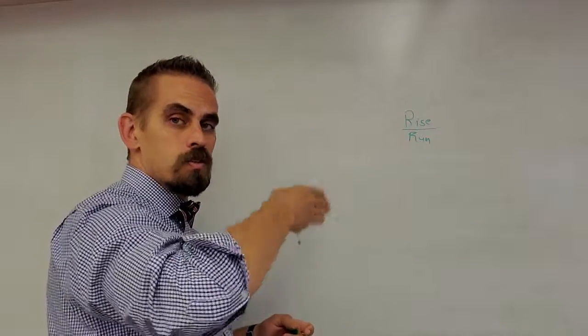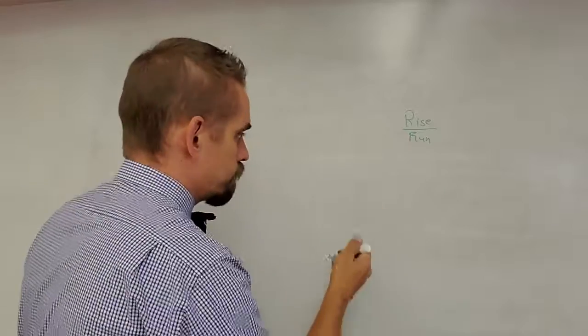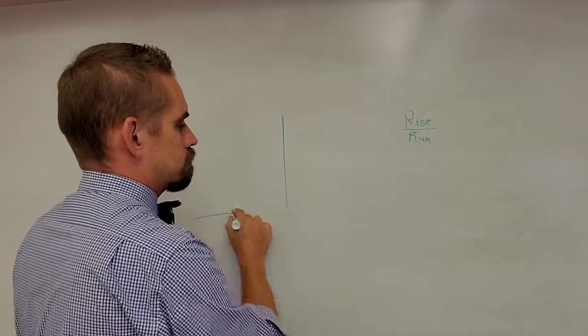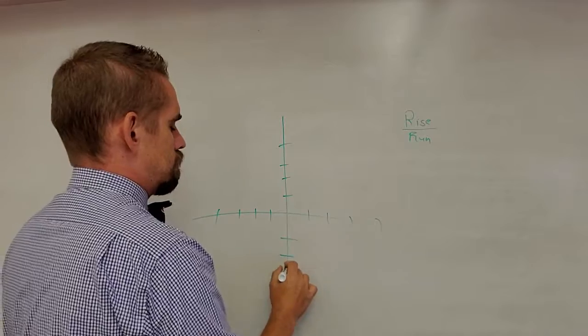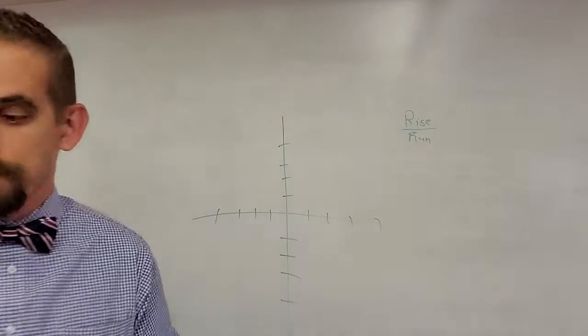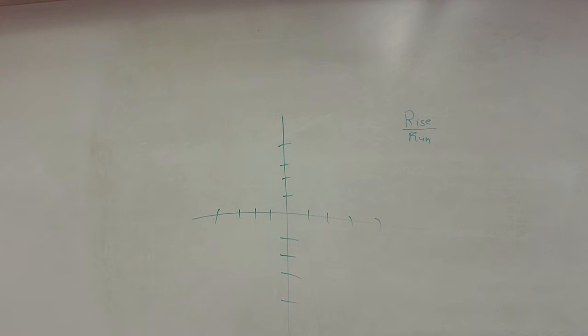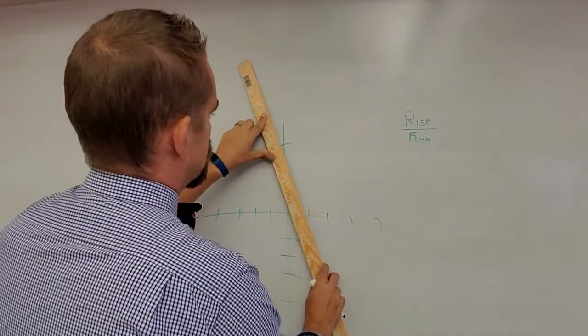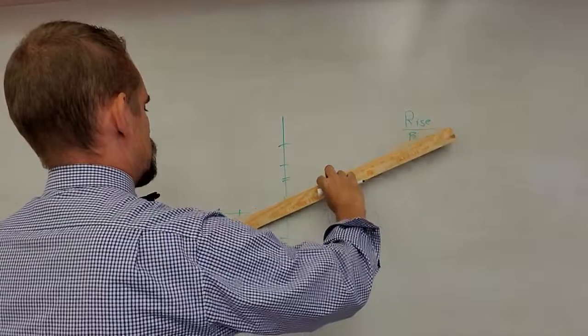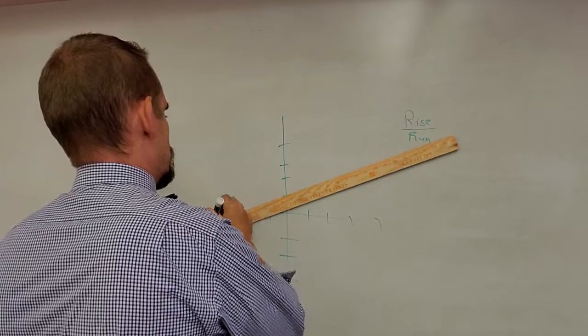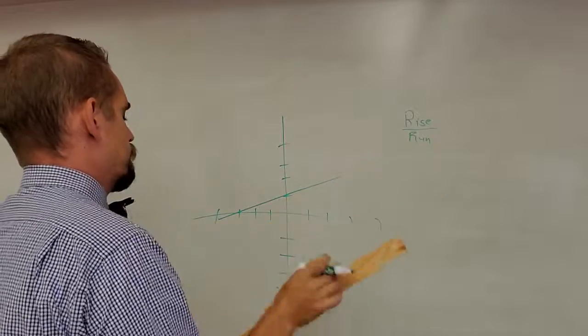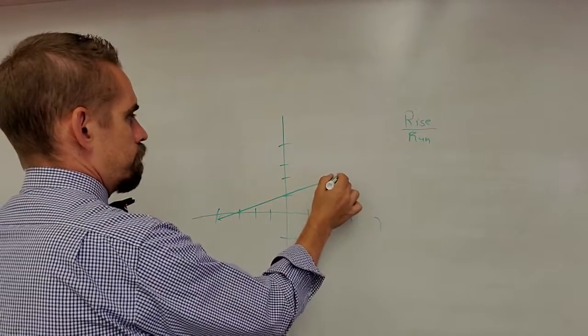Rise is counting how many points, so our vertical, run is horizontal. For example, my lines aren't going to be straight because I don't have it. Oh wait, I have a new yardstick. All right, here's my line.